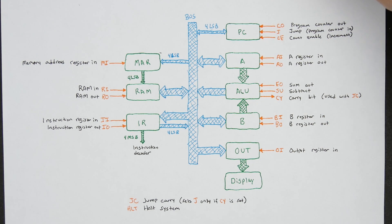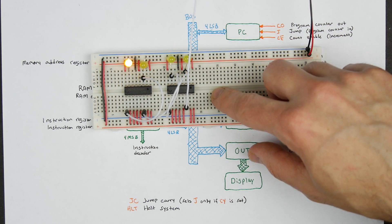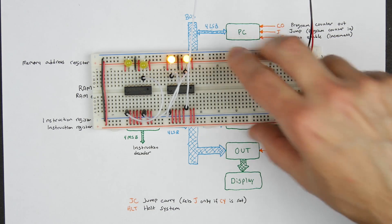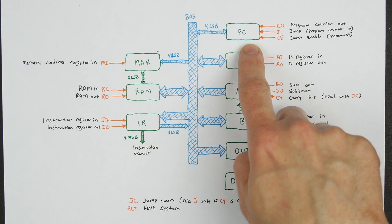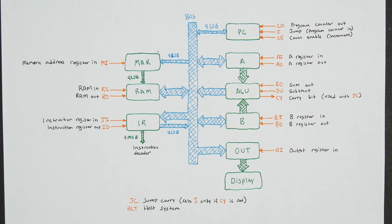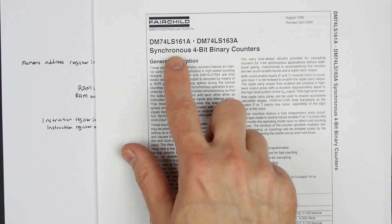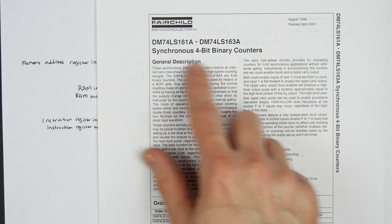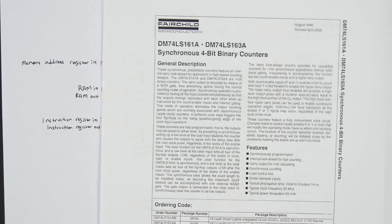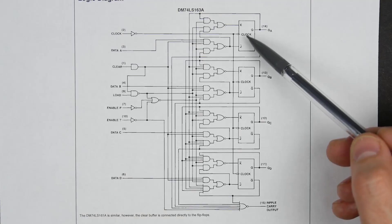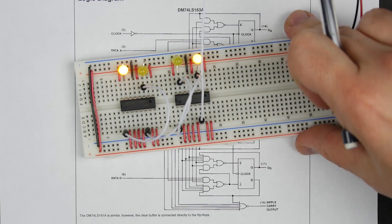Our program counter is going to be based on a simple binary counting circuit using four JK flip-flops, but we'll also need additional logic to handle the output, the jump function, and the count enable. To make things simpler, I'm going to use the 74LS161, which is a synchronous 4-bit binary counter. Synchronous just means it counts using a clock.